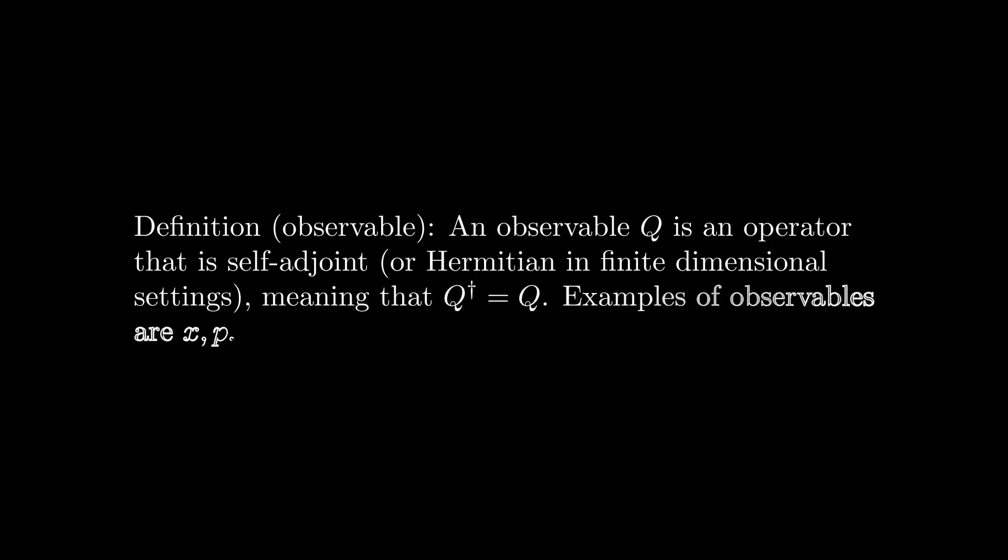Thus far, I have referred to the operators we have worked with, namely position and momentum, as observables. You may be wondering what this term actually means. Well, intuitively, it refers to quantities that we can measure, but there is also a rigorous mathematical definition behind the term. In particular, an operator is an observable if it is self-adjoint, meaning that it is equal to its Hermitian adjoint.